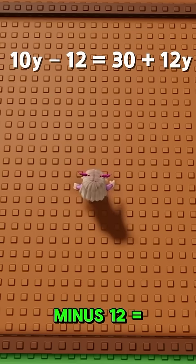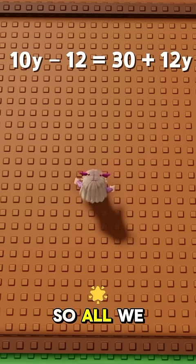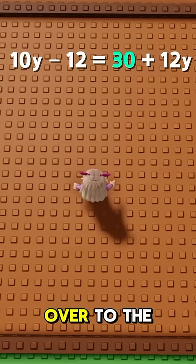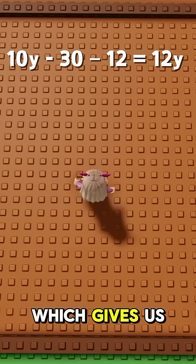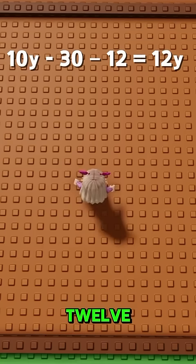Next one we have 10y minus 12 equals 30 plus 12y. So we're gonna move the plus 30 over to the other side which gives us minus 30 minus 12.